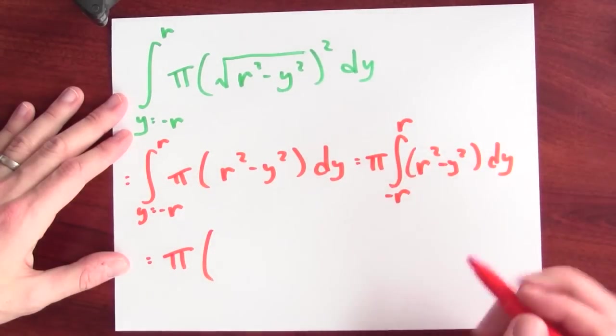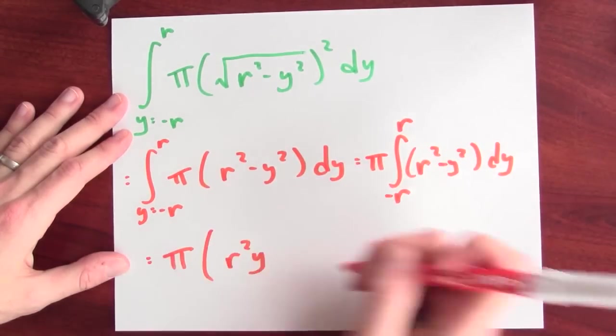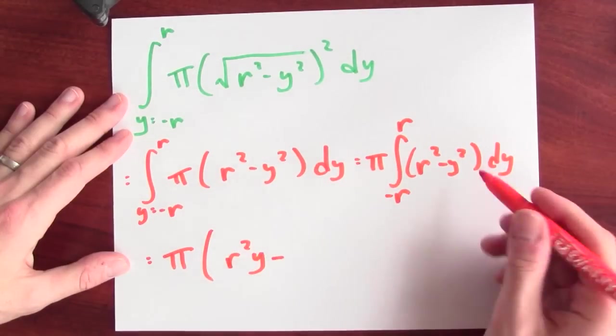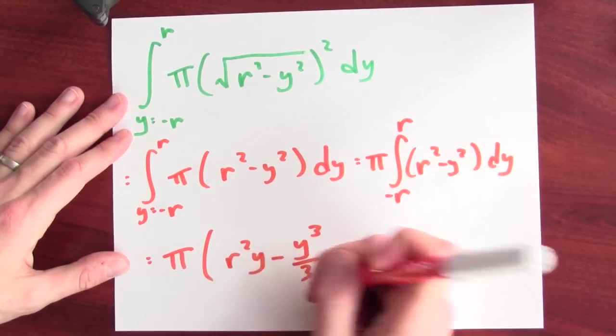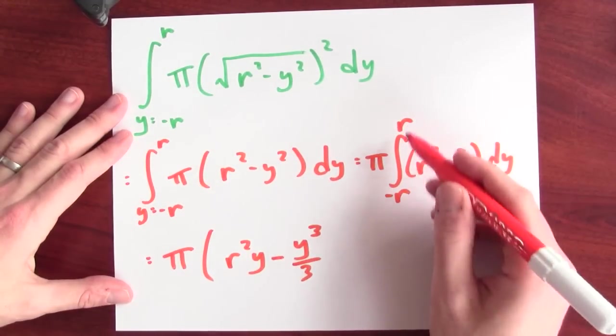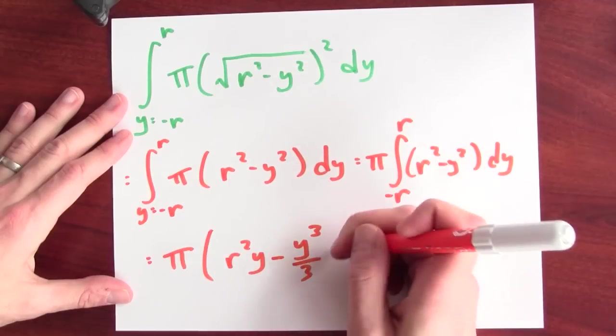An anti-derivative of that will just be r squared times y minus an anti-derivative of y squared is y cubed over 3. And I'll be evaluating that from r and minus r.